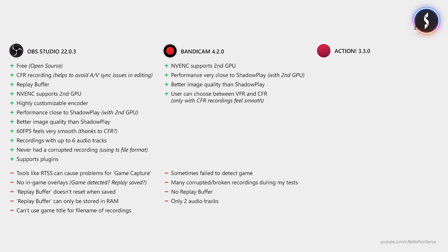Bandicam can use a second GPU for NVENC encoding. When you use a second GPU you get performance very close to Shadowplay with better video quality. The video recordings are very smooth, but only if you choose to record with a constant frame rate. However, in my tests Bandicam sometimes failed to detect the game, which meant I had to relaunch it multiple times. The even bigger issue is that when you forget to stop the recording before closing the game or when the game crashes, this corrupts the recorded video file. Bandicam does come with a tool to fix broken recordings, but it does not work with MP4 files. It also does not have a replay buffer, and it only supports 2 audio tracks.